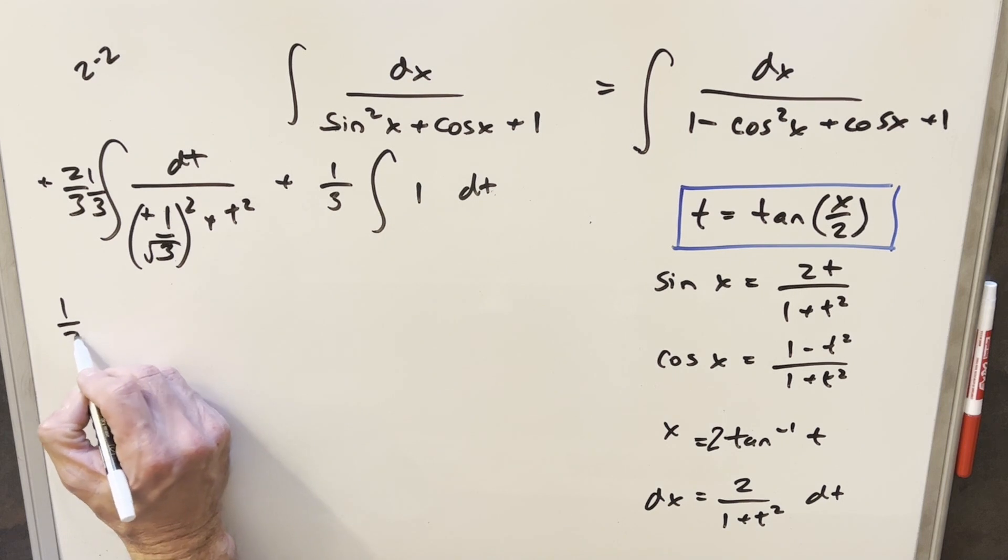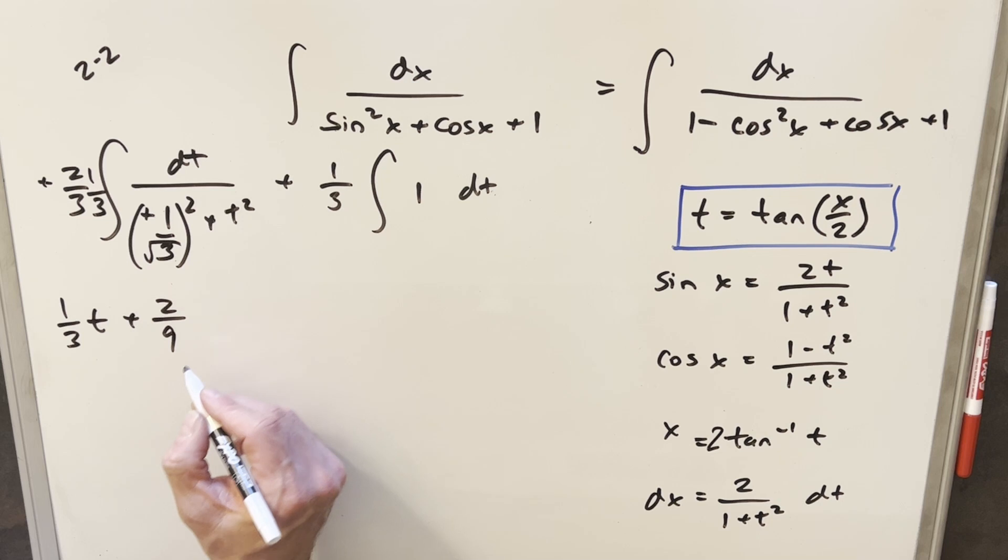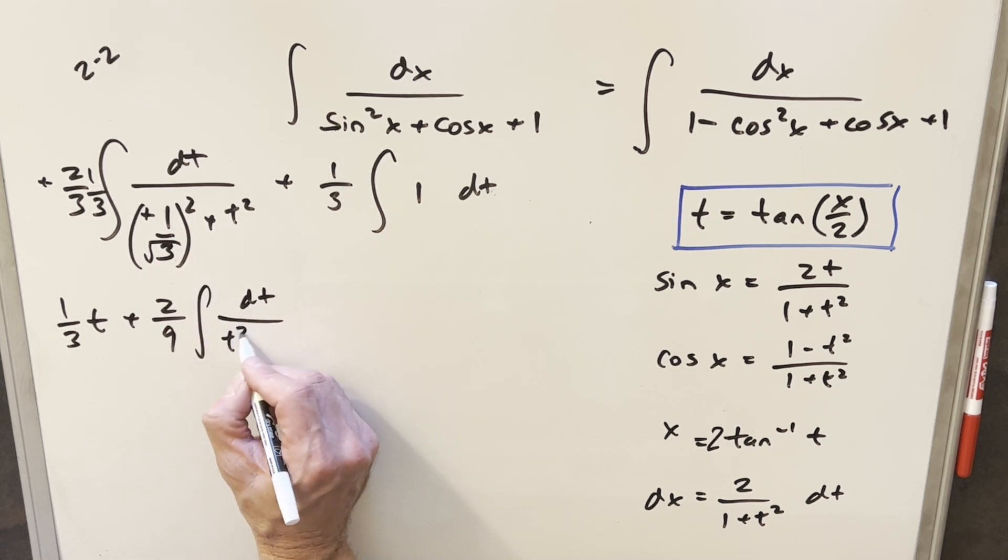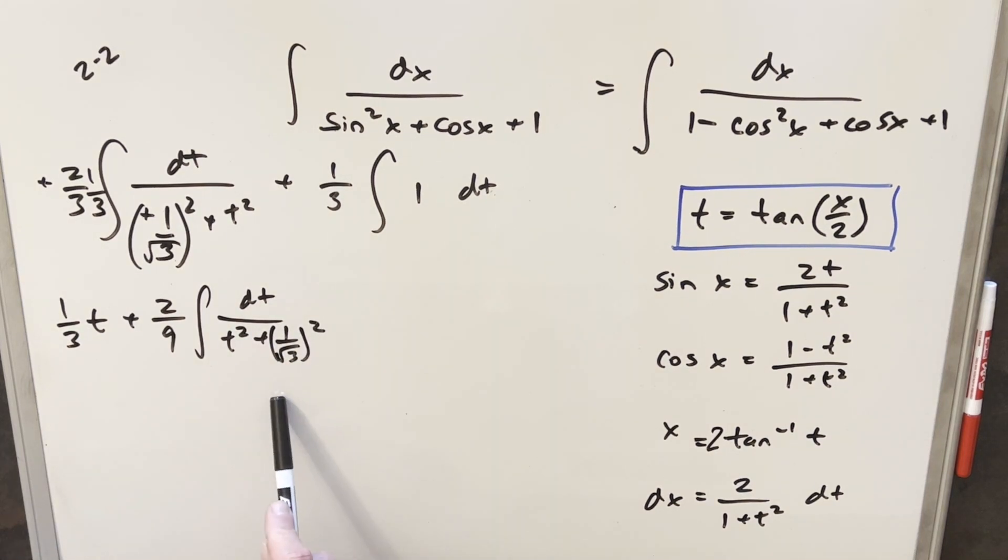Here, we're going to have 2 over 9. Let me just clean this up a little bit. I can write this as dt over t squared plus 1 over square root of 3 squared. And now we're going to integrate this thing. This is just in the form for arctan.